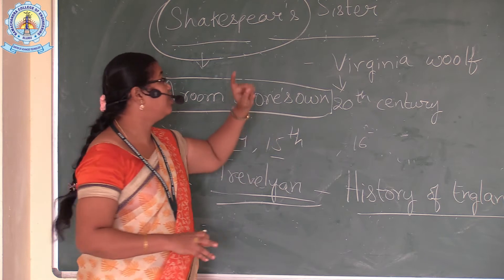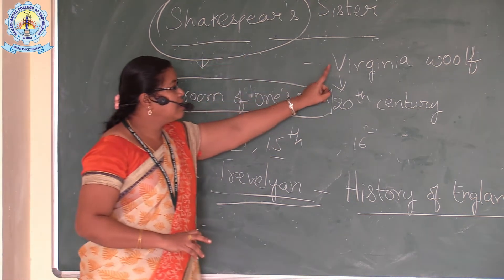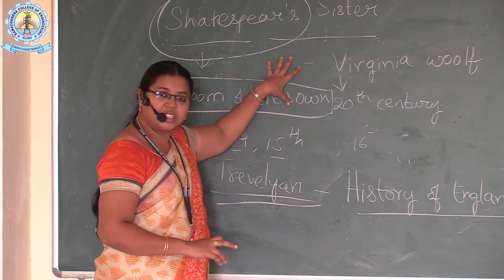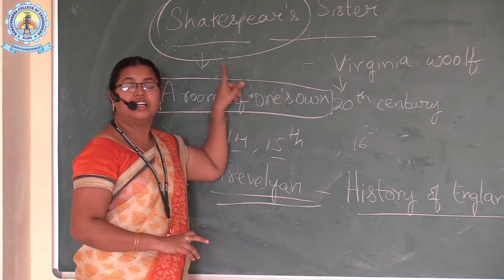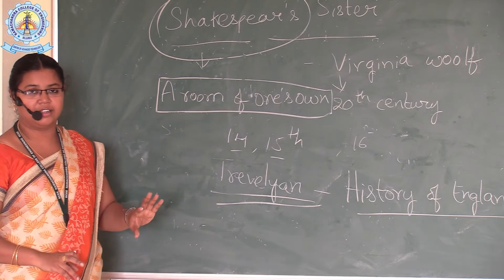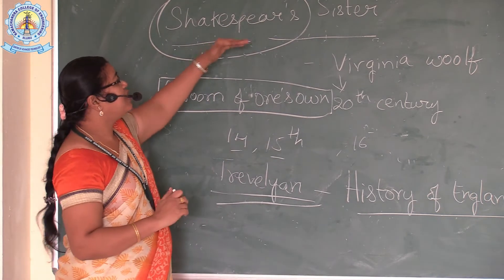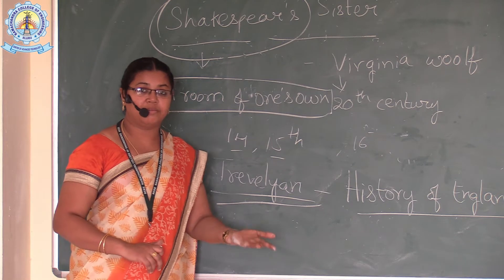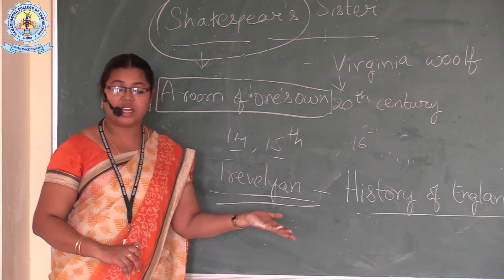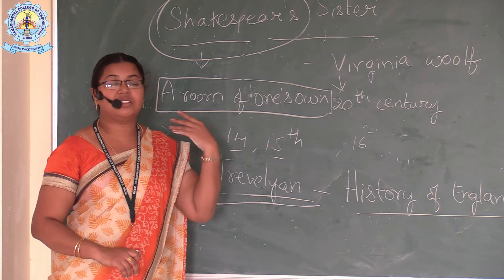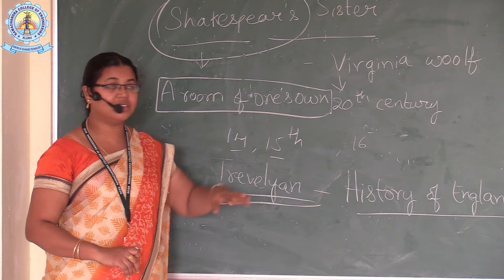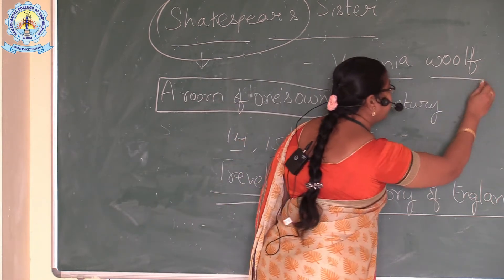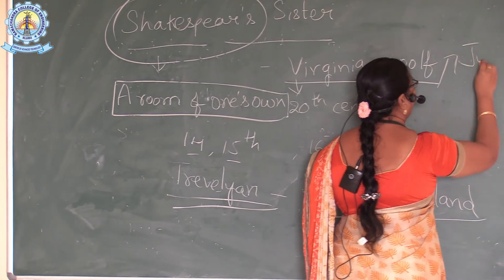England was ruled by Queen Elizabeth I, yet ladies were not allowed to get education, had no rights, and were beaten and harassed by men — treated as a legal right of a man. A famous bishop stated that no woman, present, past, or future, could possess the genius mind of Shakespeare. This prompted Woolf to write Shakespeare's Sister.